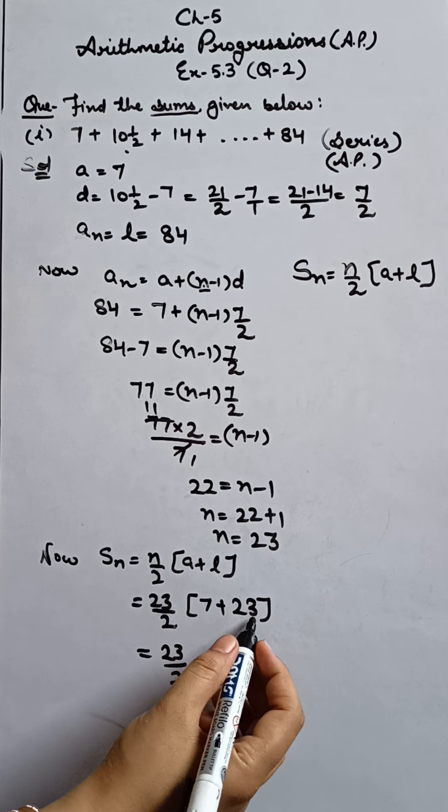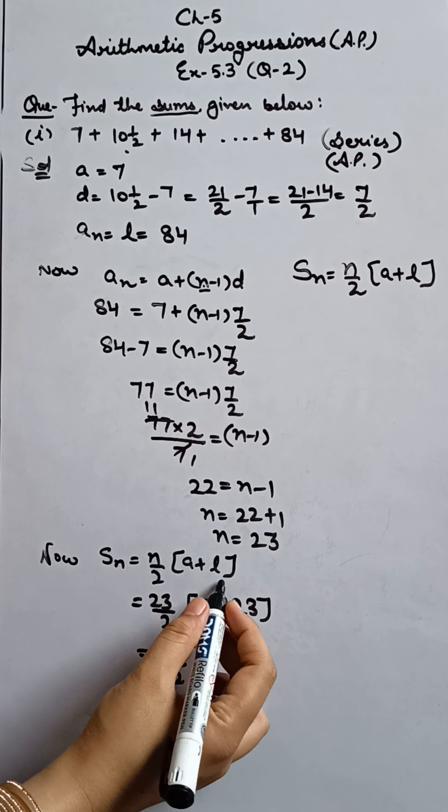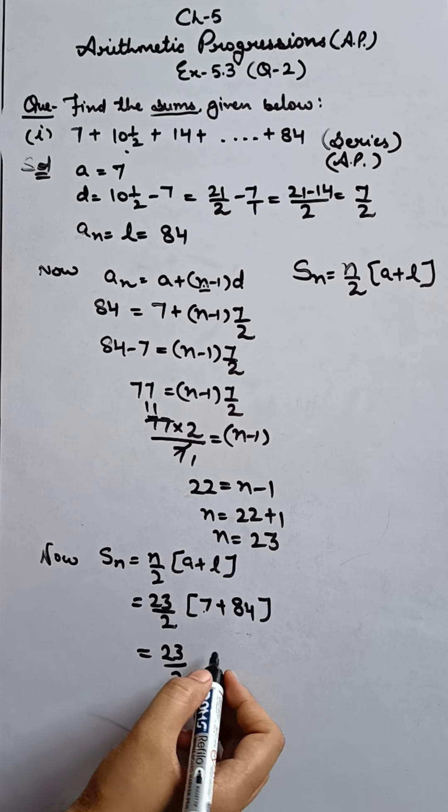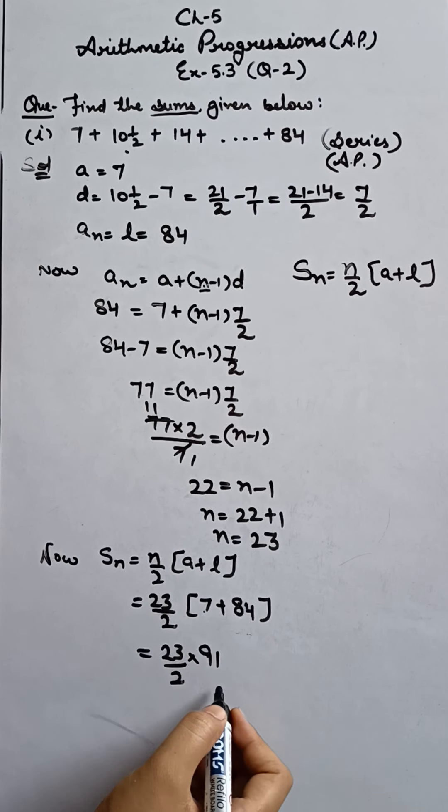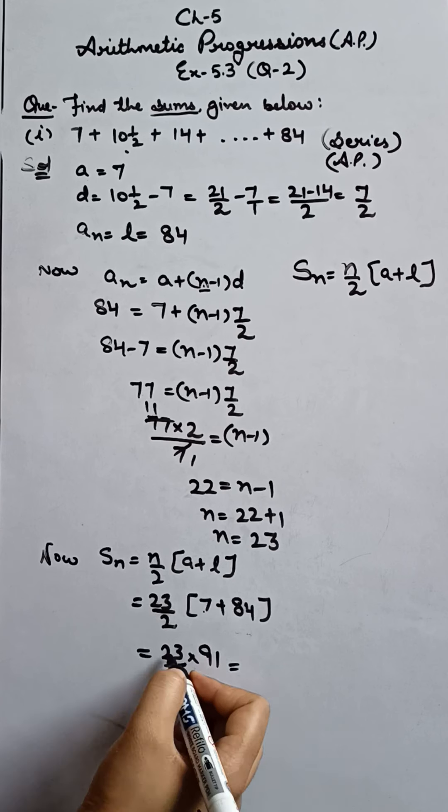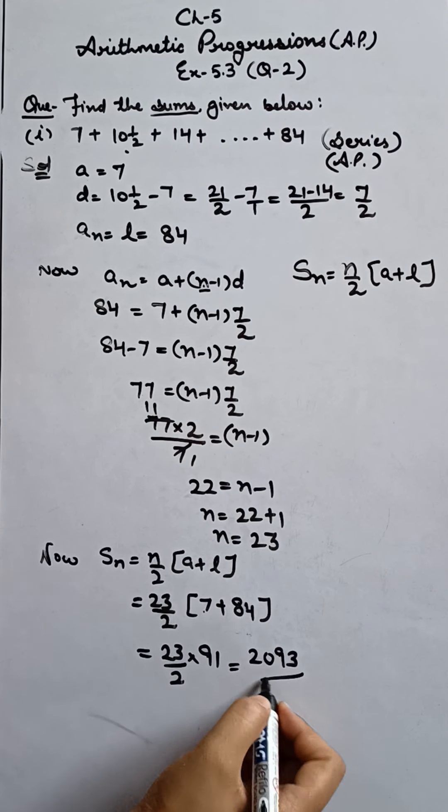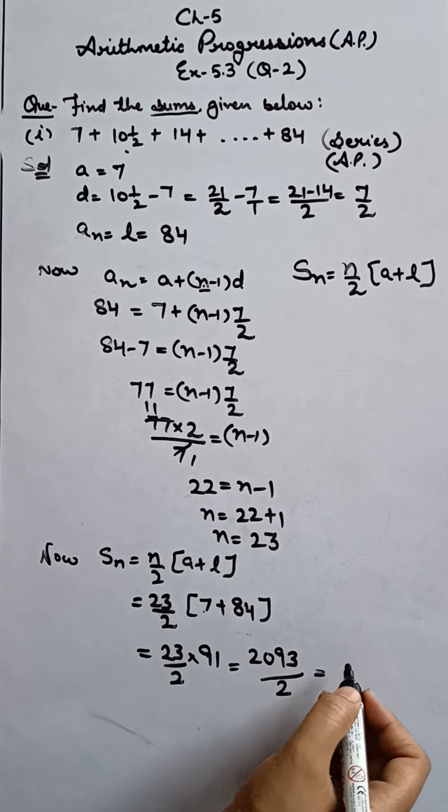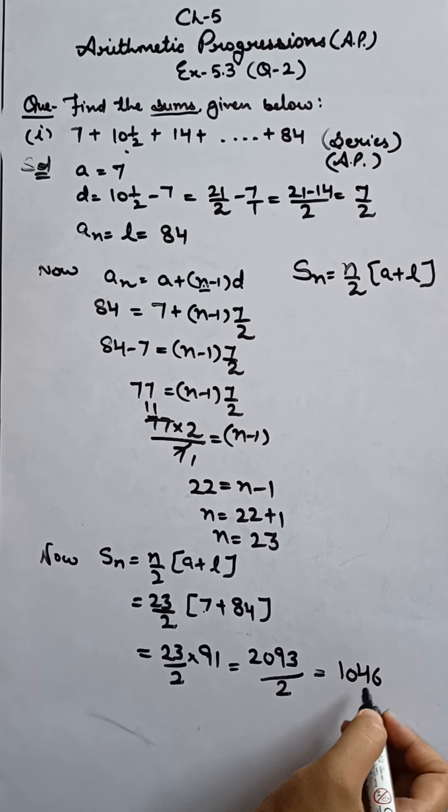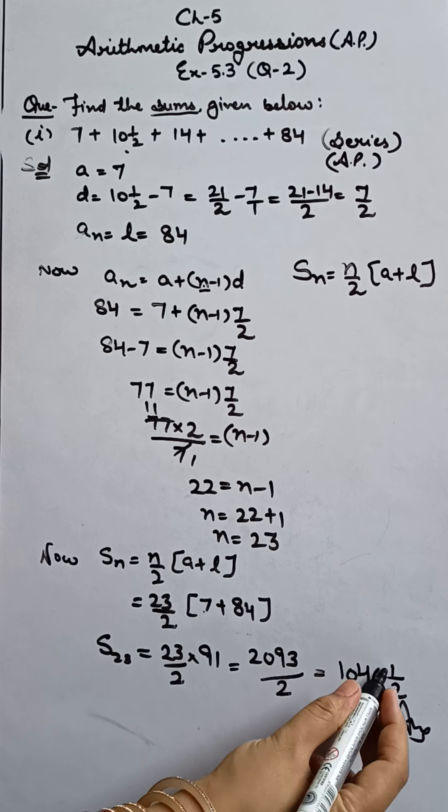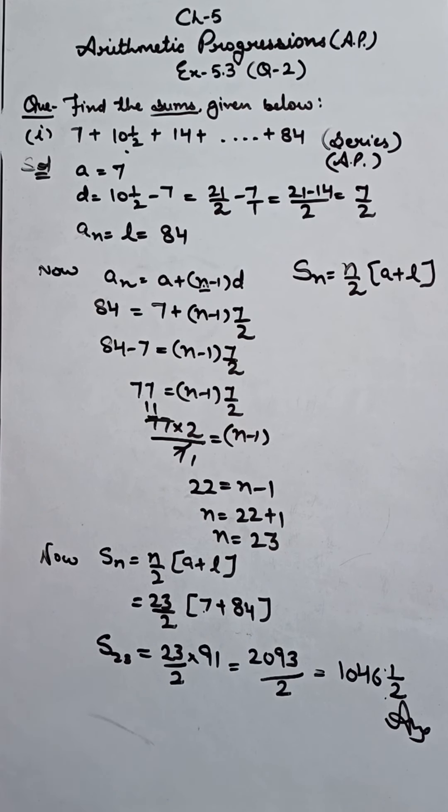So here 7 plus 84, that is equals to 91. So you can see, nothing is cancelling in numerator and denominator. So what will we do? Multiply numerator with numerator. It is 2093. Denominator as it is 2. Students, you can leave the answer till here, or you can solve it in mixed fraction, you can give that answer also. 1046 and 1 upon 2. Both answers are correct. And this is our sum of N terms, means 23 terms. 1046 and 1 by 2. So I hope this question is clear to all.